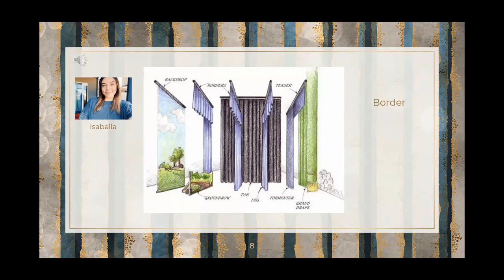As you go more upstage you see more drapes similar to the teaser and tormentors. The one above is called the border and hanging from either side are the legs. The difference between the border and legs and the torms and teasers is basically slim to none, other than one is downstage and the rest are upstage. The torms and teasers could also be painted to match the rest of the set and placed in front of the grand drape, but then it's called something else — a false proscenium.